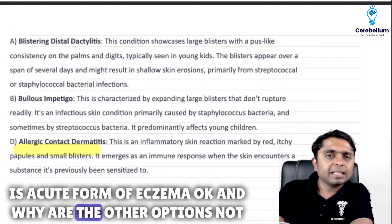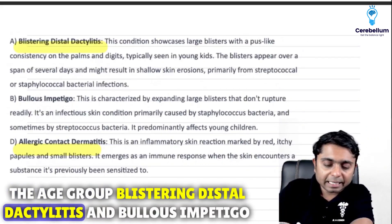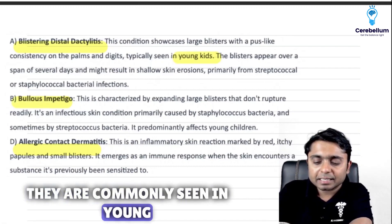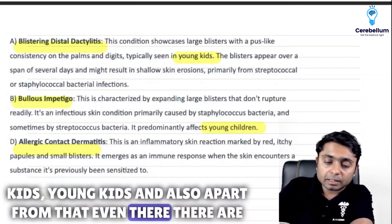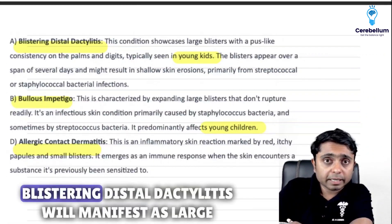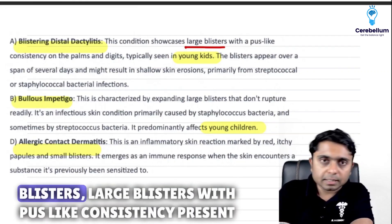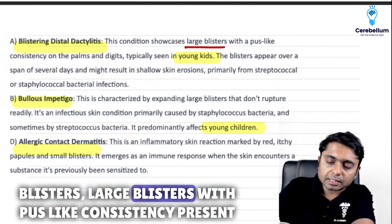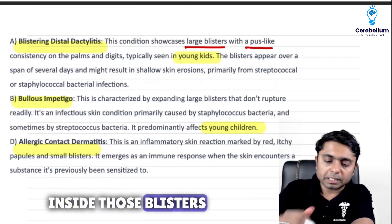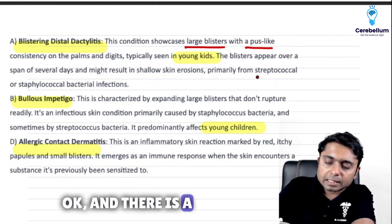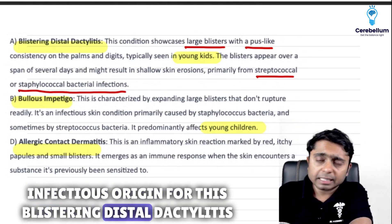Why are the other options not the answers? Very simple. Blistering distal dactylitis and bullous impetigo are commonly seen in young kids. Additionally, blistering distal dactylitis manifests as large blisters with pus-like consistency inside those blisters, and it has an infectious origin. Bullous impetigo is also characterized by large blisters and is infectious, caused by Staphylococcus or Streptococcus.